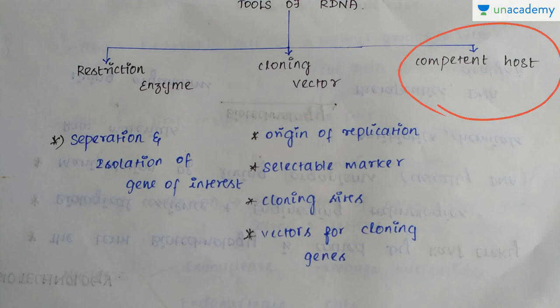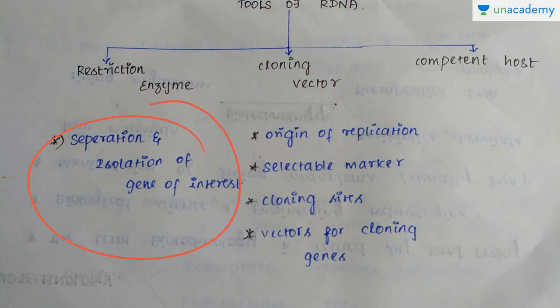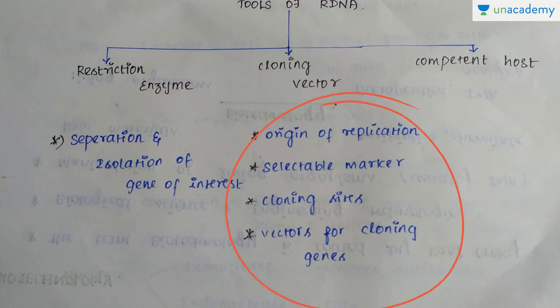After cutting the DNA with restriction enzymes, we are going to separate and isolate the gene of interest. And within the cloning vector, we are going to see some of its features such as origin of replication, selectable marker, cloning sites, and the vectors needed for cloning the genes.